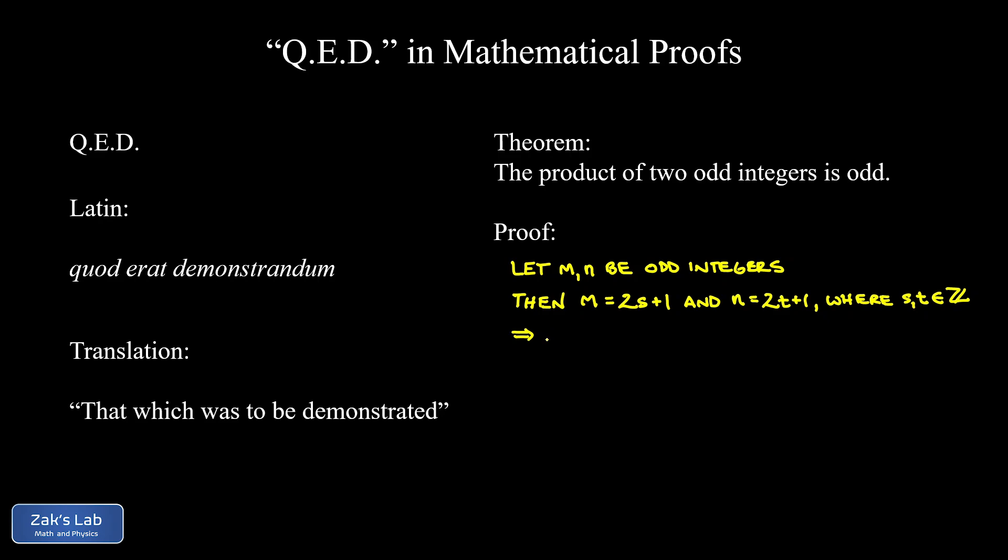Now we can say that this implies the product M times N of these two original odd numbers. That can be written as (2S+1) multiplied by the quantity (2T+1). And then we distribute and we get 4ST plus 2S plus 2T plus 1.